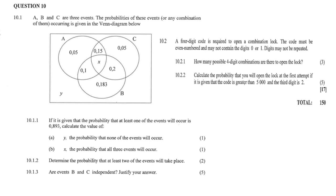10.11: if it is given that the probability that at least one of the events will occur is 0.893, calculate the value of Y — the probability that none of these events will occur — and X, the probability that all three events will occur. 10.12: determine the probability that at least two of the events will take place. 10.13: are events B and C independent? Justify your answer.